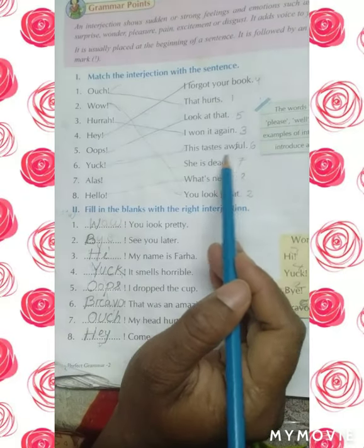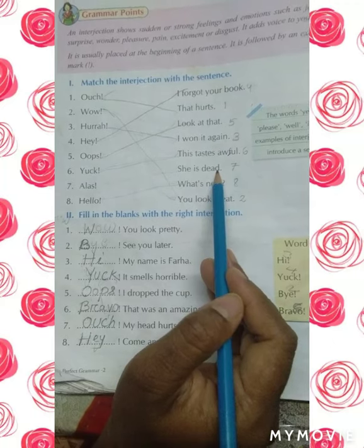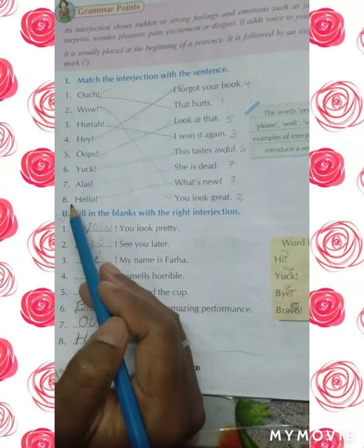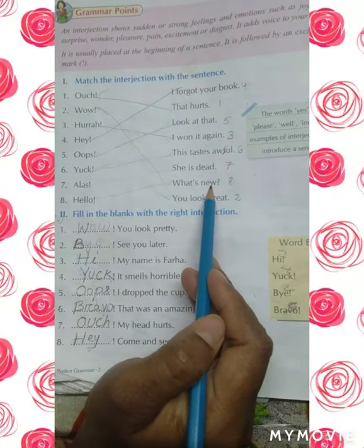Number seven: Alas - she is dead. Number eight: Hello - what's new.